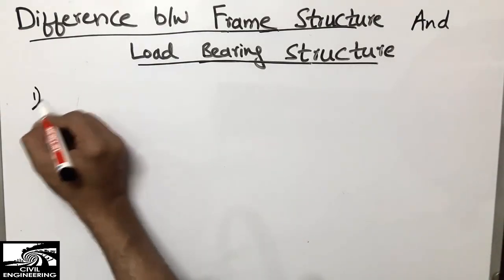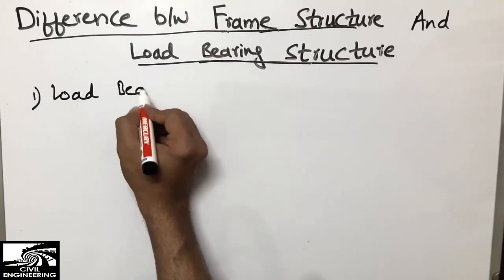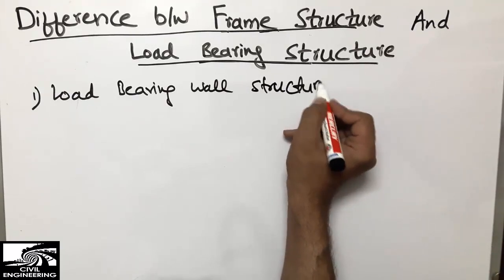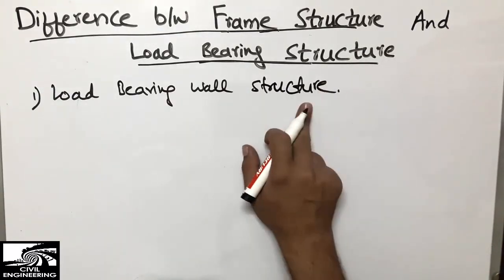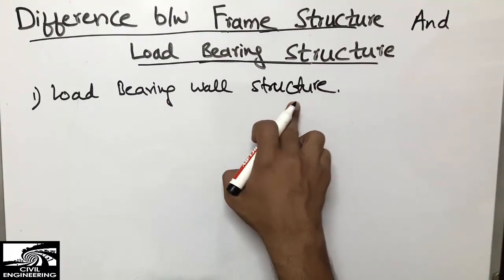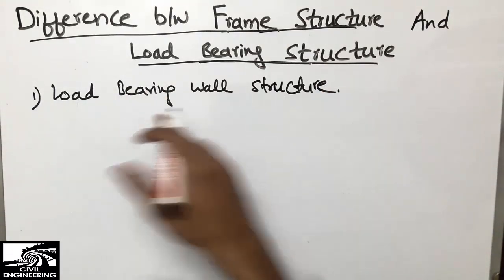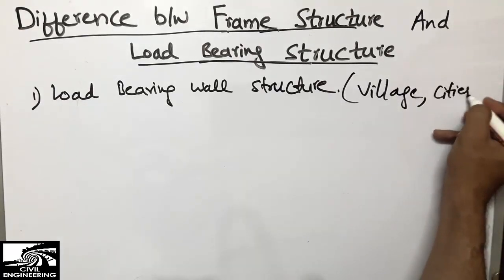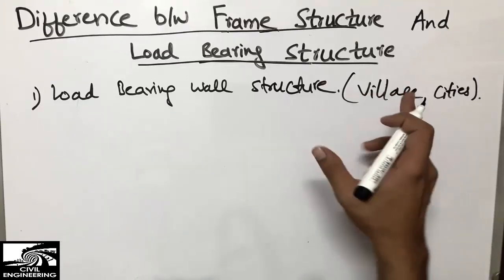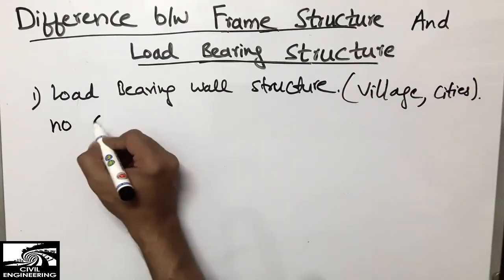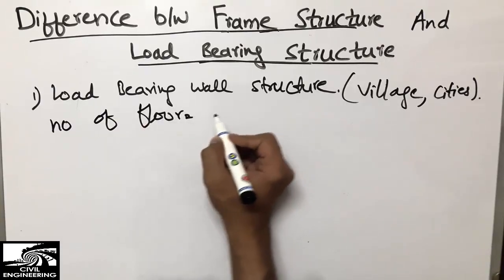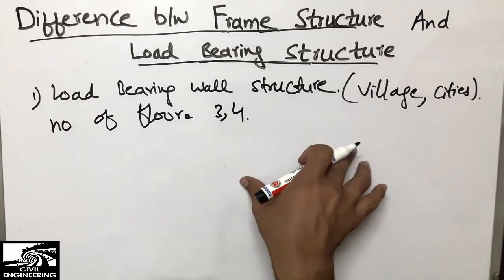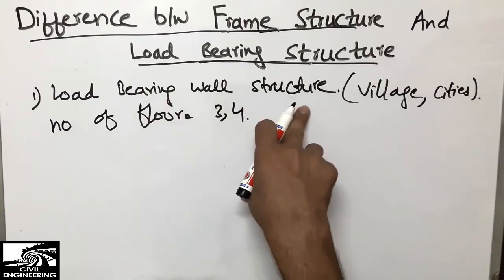The first one is the load bearing wall structure. These are structures we construct in our daily life, mainly found in villages. They are not more than three or four floors maximum. I will now show you how the load transfer works in a load bearing wall structure and why they are limited to three or four stories.